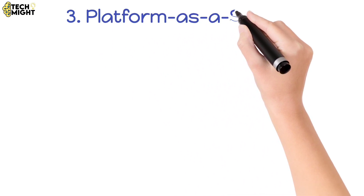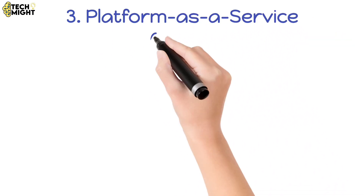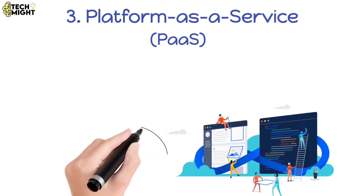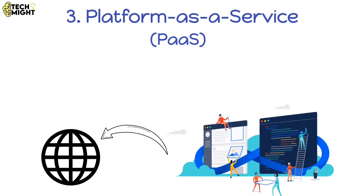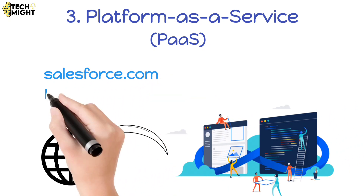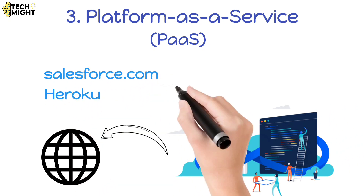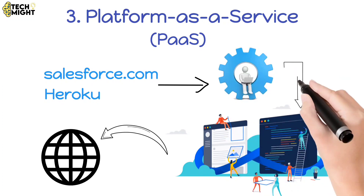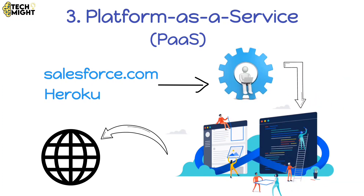Finally, we have Platform as a Service, PaaS. This is a bit more complex — it's a platform for creating and delivering software over the internet. Platforms like Salesforce.com and Heroku fall into this category. They provide tools for developers to build and deploy applications without worrying about the underlying infrastructure.